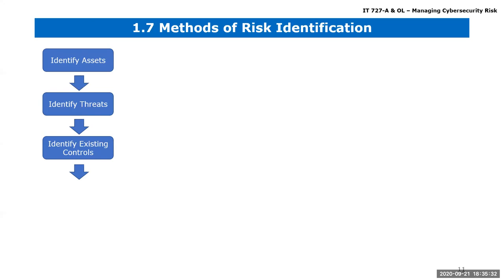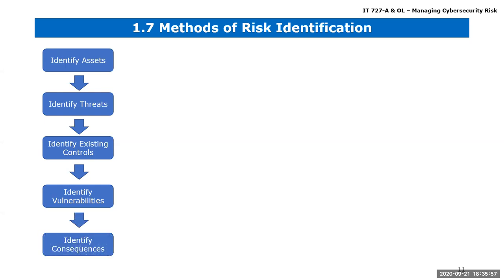We covered the methods of identifying risk. We discussed what an asset is, what the threats could be, identifying existing controls, identifying vulnerabilities, and including identifying the consequences — what is the detrimental effect if something were to happen?